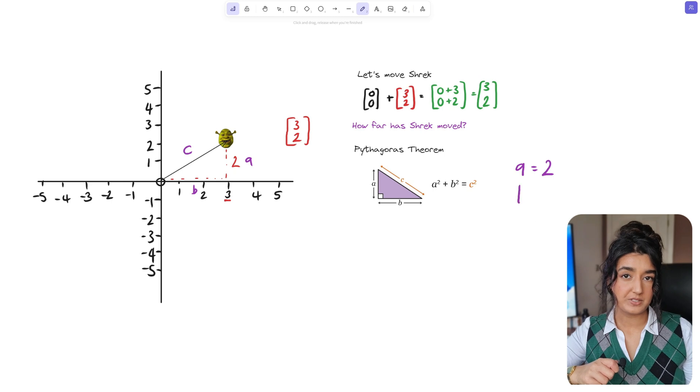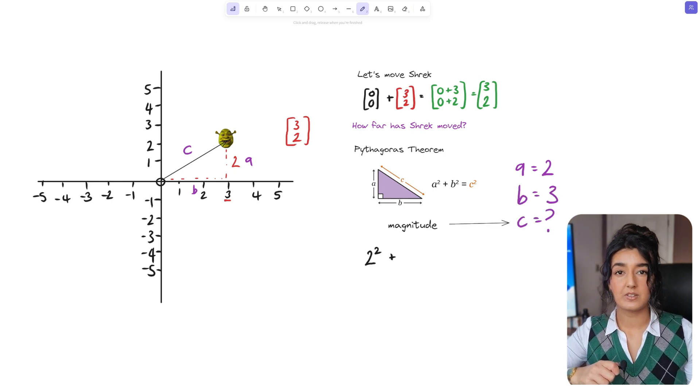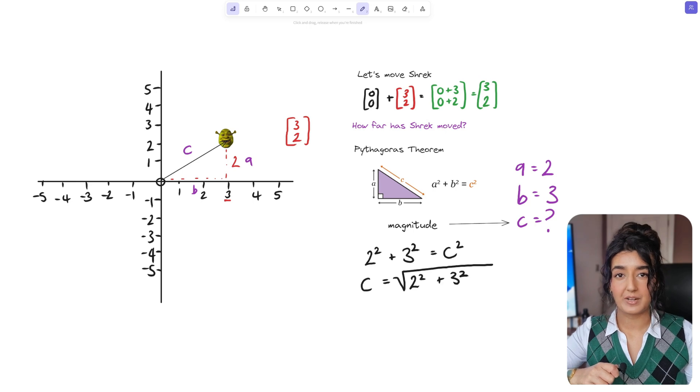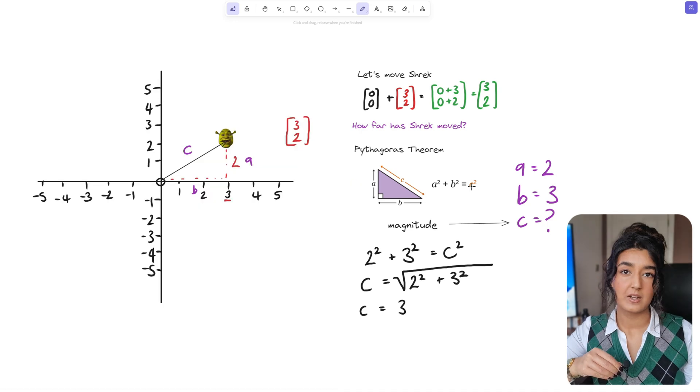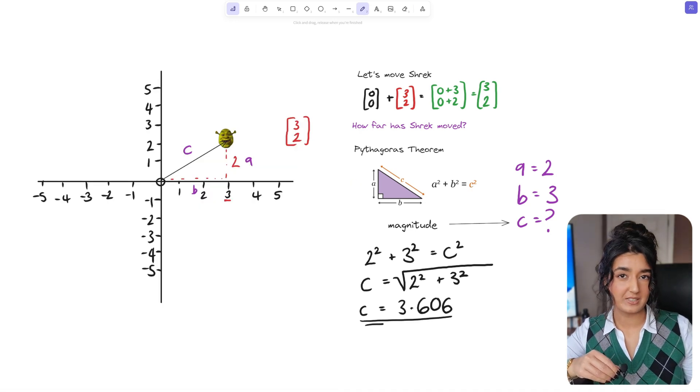We know that a equals 2, b equals 3 and if we input these values and solve our magnitude comes out as 3.606 to three decimal places. Great so now we know how to calculate the magnitude.